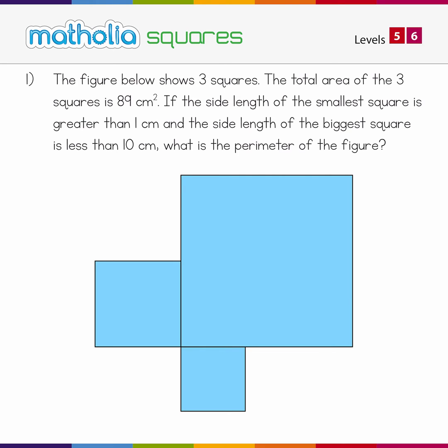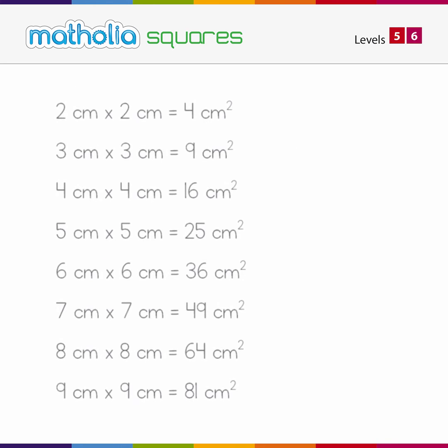There are a few ways to solve this, but I'm going to start by making a list of the possible areas for squares with a side length between 2 centimetres and 9 centimetres. Now we can use the guess and check method to find the sum of three areas and see if they match 89 square centimetres.